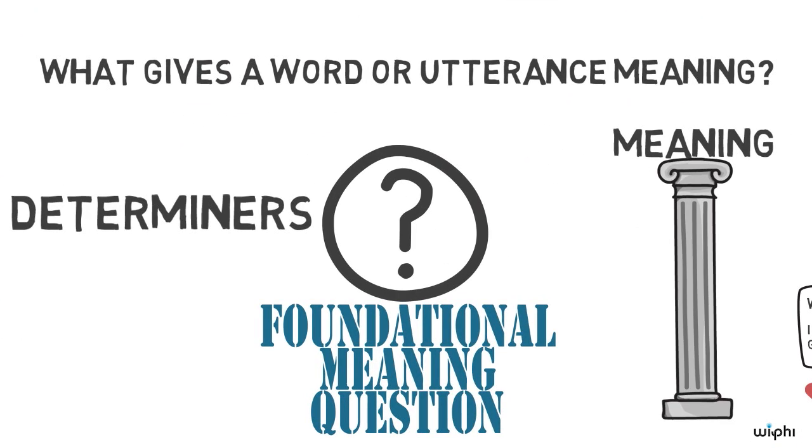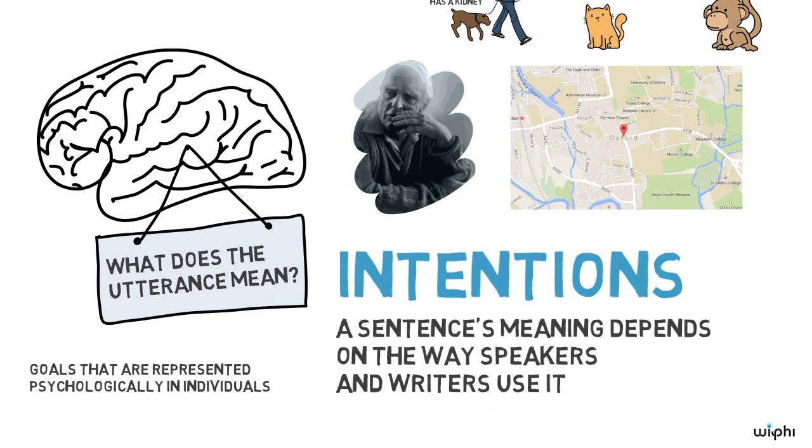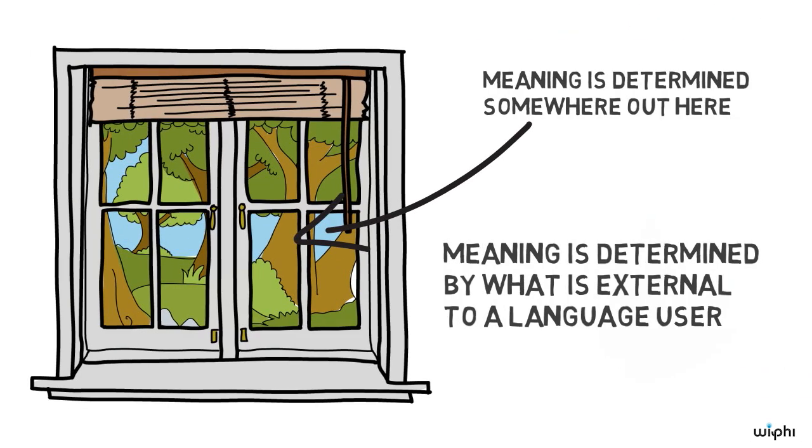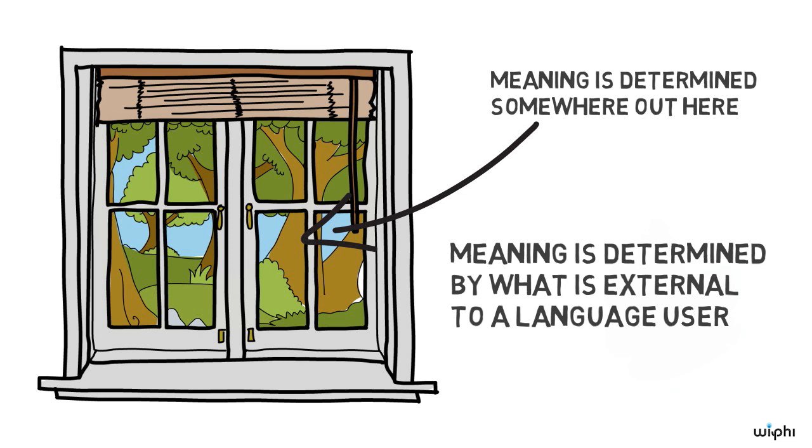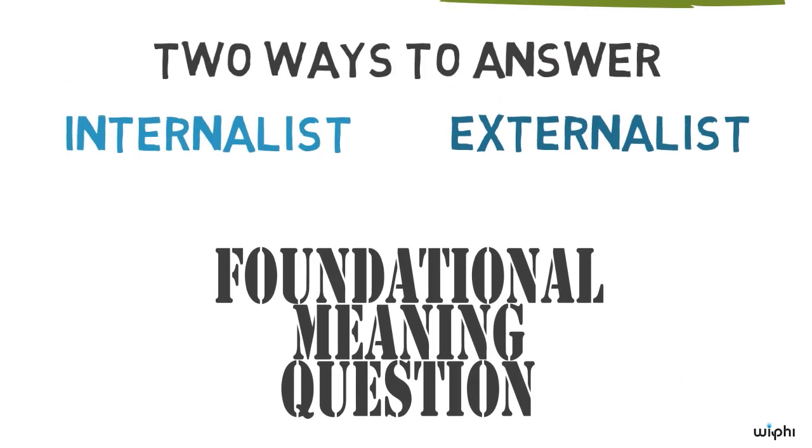Let's sum up. We began with the question, what makes our words and sentences meaningful. We saw that internalists argue that complex speaker intentions that are part of an individual's psychological state determine meaning. In contrast, externalists argue that some external factors, like one's natural environment, work to determine what our words and sentences mean. These are two ways to answer foundational meaning questions.